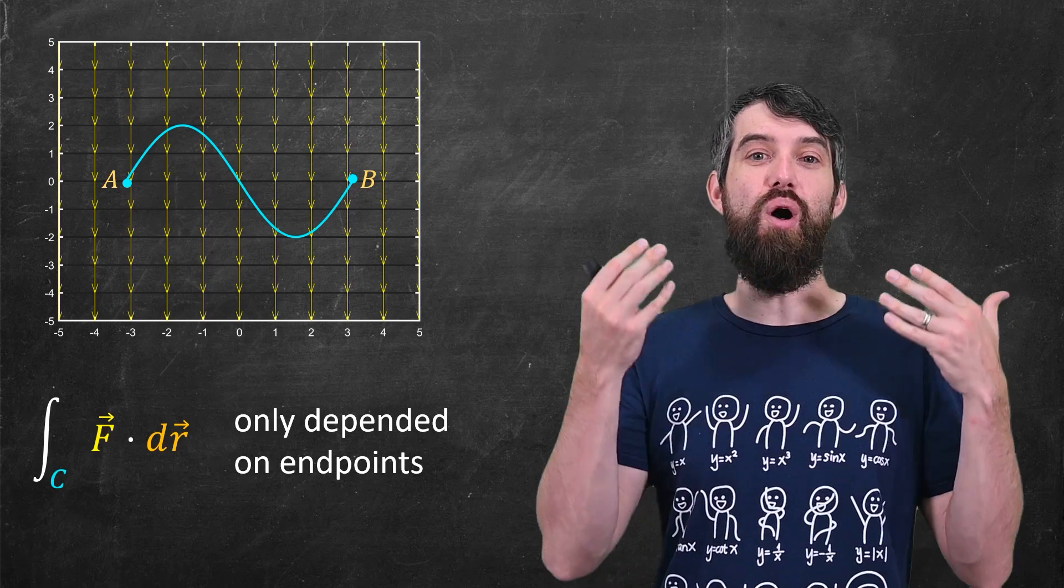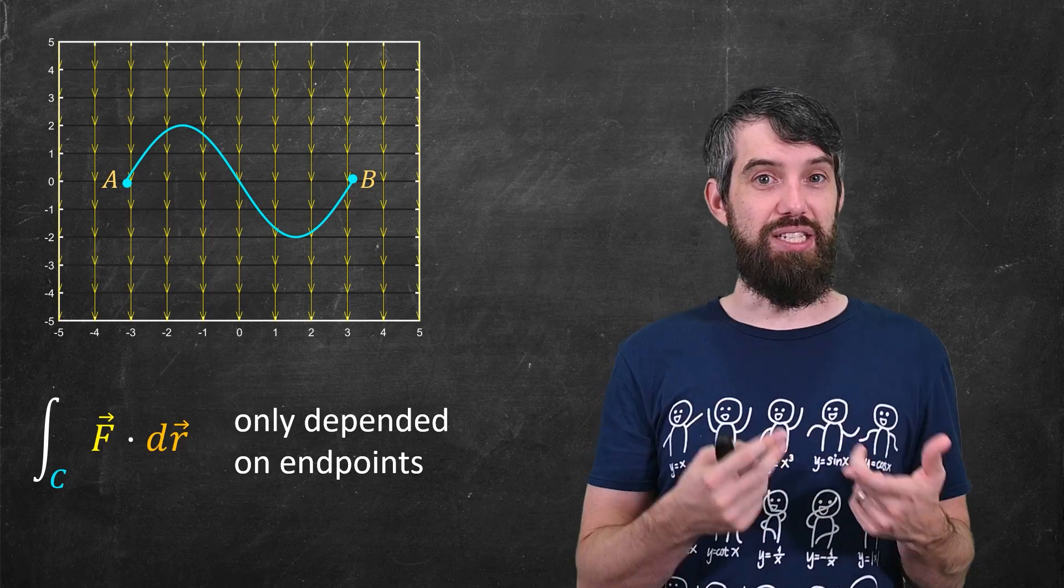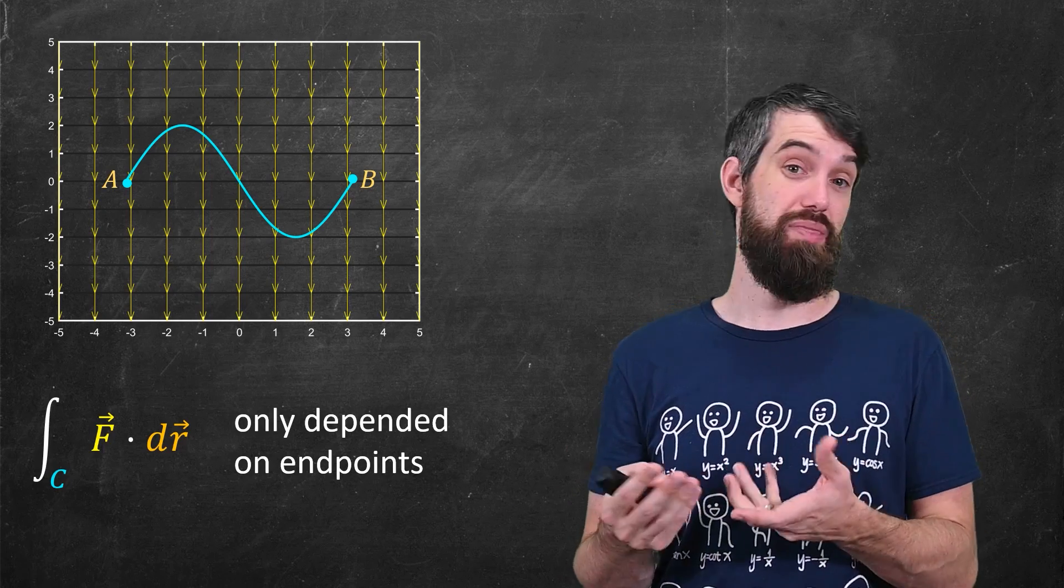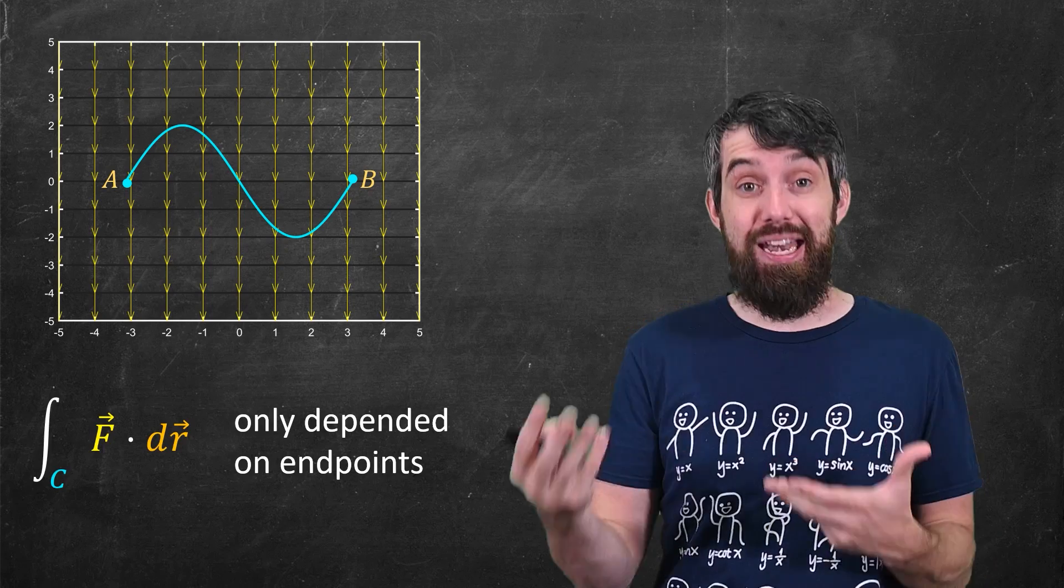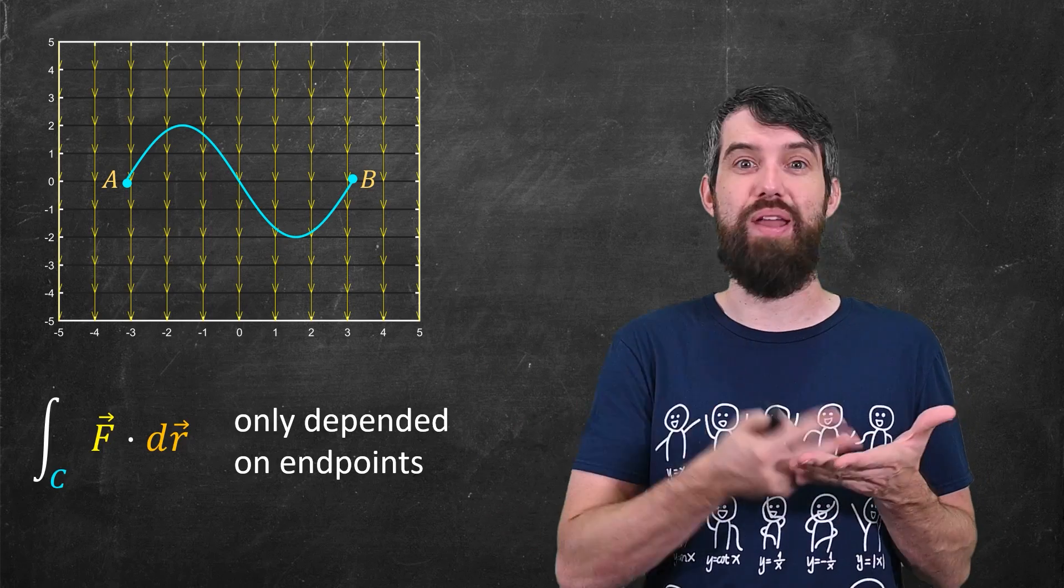it only depended on the endpoints for this particular field. That is, this field was conservative which by definition meant that this line integral was independent of the particular path, it just depended on the endpoints.